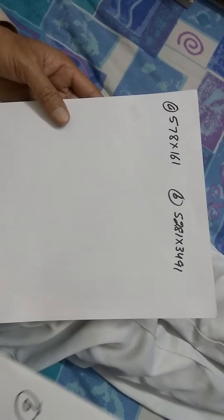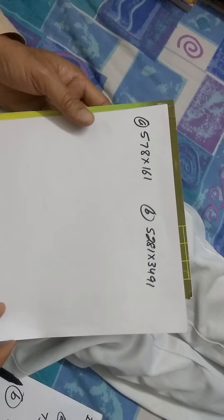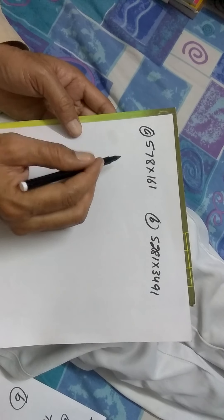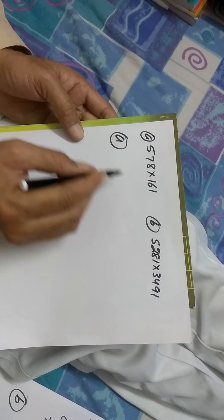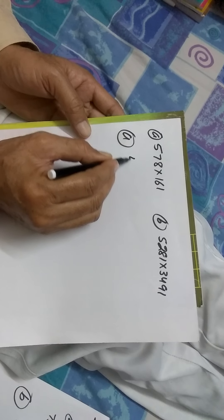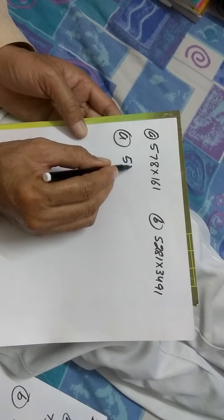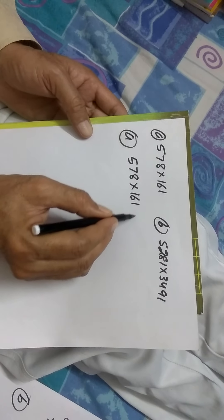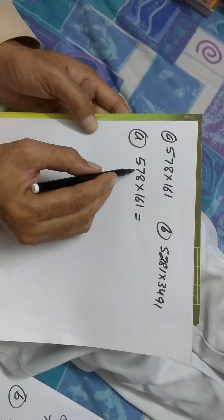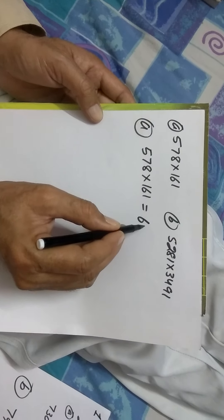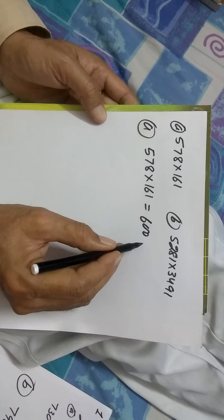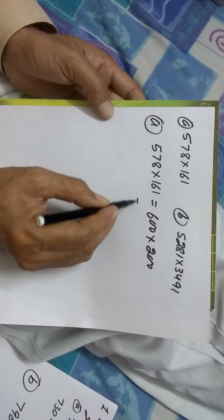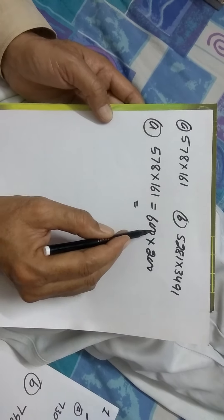Let's take up one more question. That is the estimation for the product. Here, let's take up the first one. The two numbers which are to be multiplied are 578 is to be multiplied with 161. Here, 578 can be estimated to 600. And 161 can be estimated to 200. Total number of zeros, 1, 2, 3 and 4.